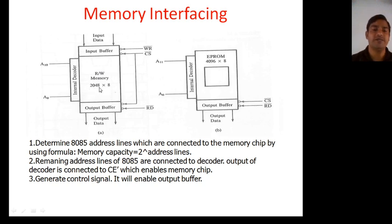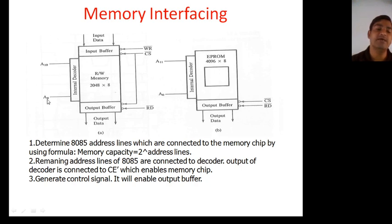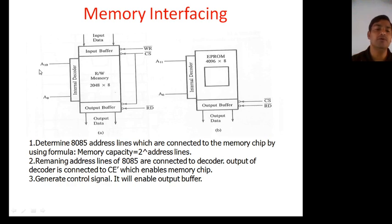Suppose this memory chip is 2048 by 8 — 2048 is the total number of registers, and 8 is the size of each register. Memory is nothing but a group of registers. To determine the total number of address lines required to connect with the memory chip, use the formula: memory capacity equals 2 to the power of address lines. For 2048, that is 2 into 1024, which equals 2 to the power 11 — meaning it is a 2KB RAM and address lines are A0 to A10.